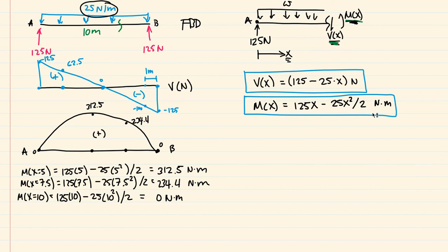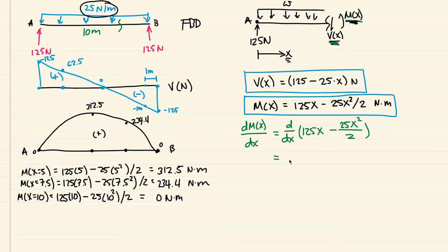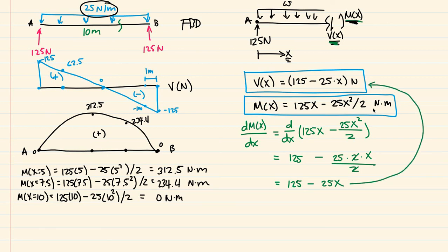We have our shear equation and our moment equation. What's cool is that if we differentiate the moment equation with respect to x, we should get the shear equation, because shear is the slope of the moment diagram. Taking dm(x)/dx = d/dx [125x minus 25x² over 2]: the derivative of 125x is 125, and the derivative of 25x² over 2 is 25(2)x divided by 2, where the 2s cancel, giving 25x. So dm/dx = 125 minus 25x, which is exactly the shear equation from the last video.